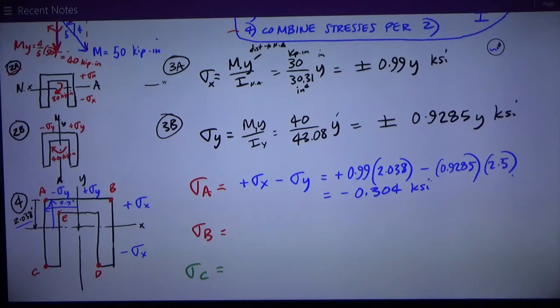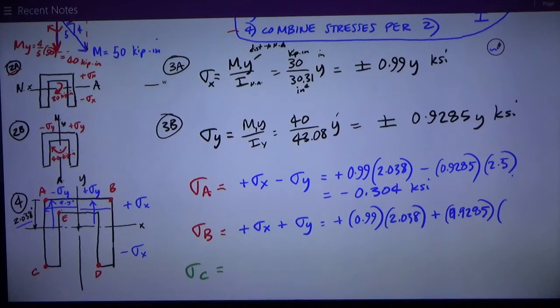Point B is very similar, except I have positive sigma x and positive sigma y. So the numbers are very similar. I've got 0.99, I've still got that distance to the neutral axis from B, 2.038. And now it's positive 0.9285 times that distance to the y neutral axis, 2.5. And that works out to be 4.34 positive, so it's tension.